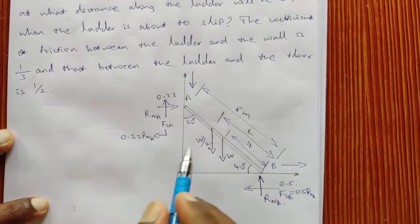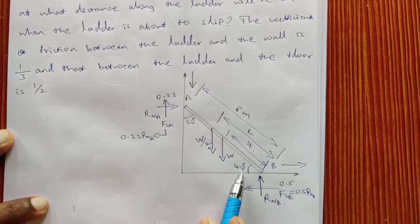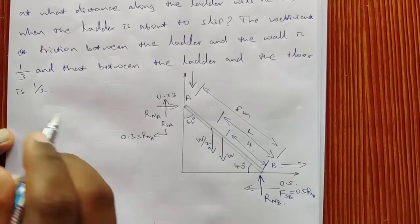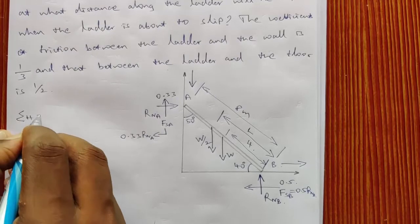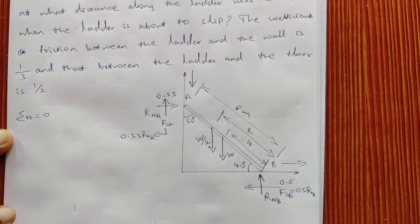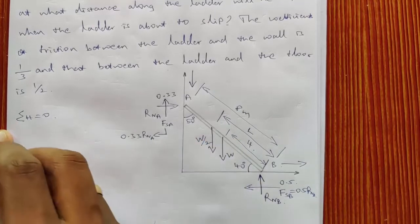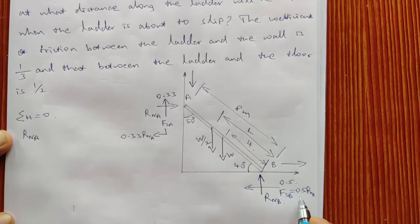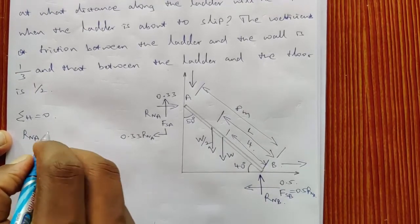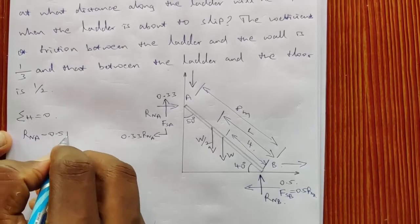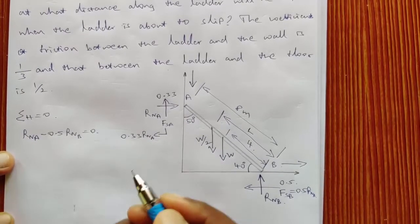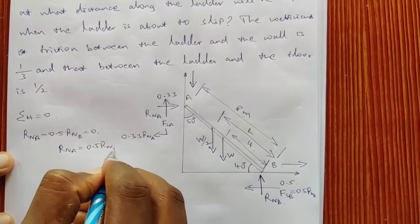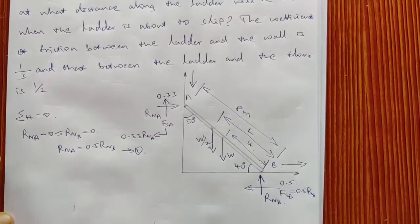Here mu, the length, and theta are given, and we have to find the value of L. Starting with the summation of horizontal forces equal to zero: RnA acts in the positive x-direction and FsB (0.5 RnB) acts in the negative direction, so RnA minus 0.5 RnB equals 0, giving us RnA equals 0.5 RnB. Keep this as equation number 1.